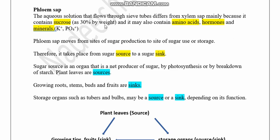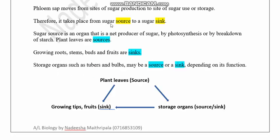Phloem sap mainly contains sucrose, about 30% by weight, and also contains amino acids, hormones, and minerals. When we take xylem sap that passes through the xylem tube, it mainly contains water and minerals. The place where phloem translocation starts is known as the source.